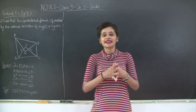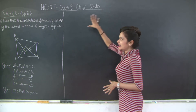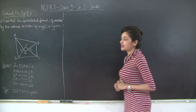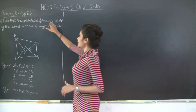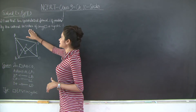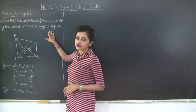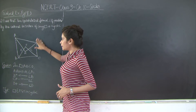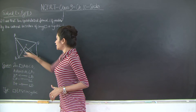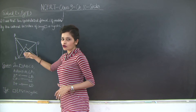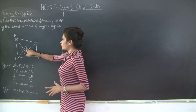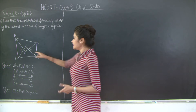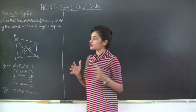Hey students, welcome back. Let us continue with Chapter 10 - Circles. This is the last solved example before we start Exercise 10.5. Question number 6: prove that the quadrilateral formed, if possible, by the internal bisectors of any quadrilateral is cyclic. This means if we have a quadrilateral ABCD such that the bisectors AH, BF, CF, and DH of angles A, B, C, D respectively form a quadrilateral EFGH, we need to prove that EFGH is a cyclic quadrilateral.